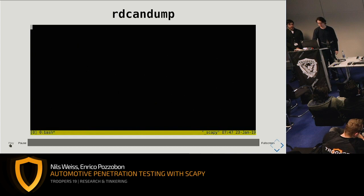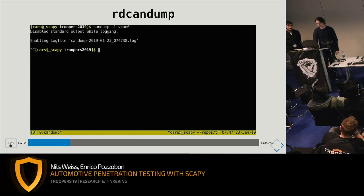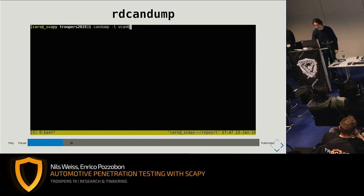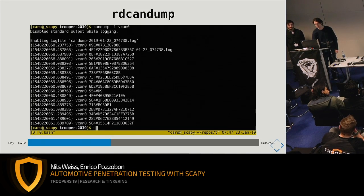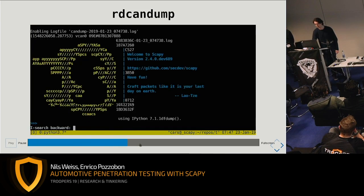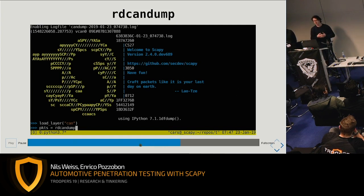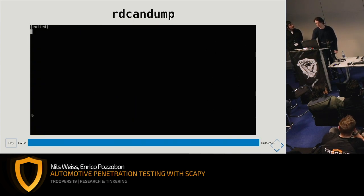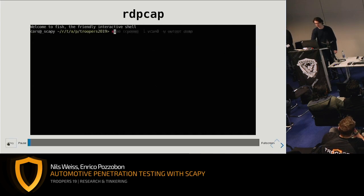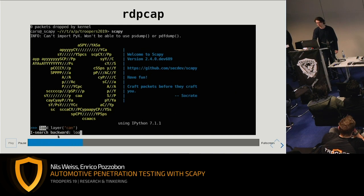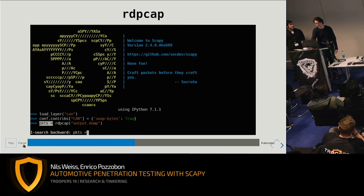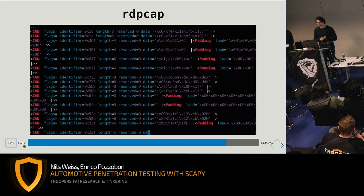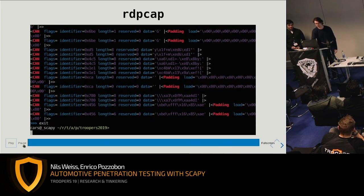Some other small utilities for CAN: you can easily create log files with candump. A candump log file looks like a specific format, and a small utility called read_candump in Scapy creates a list of CAN packets out of that log — handy for further investigation. The same works on PCAP: do tcpdump on a CAN interface, specify the swap_bytes parameter, and use rdpcap from Scapy to get all CAN packets printed out.